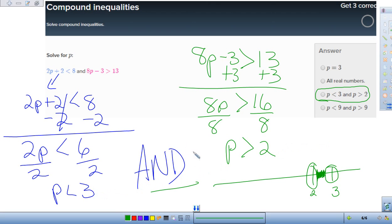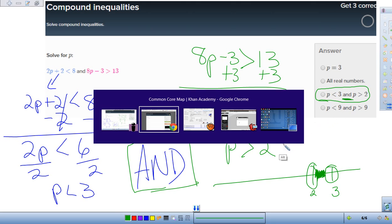But this is an and statement. It means that both have to be true. This has to be true and this has to be true. This is a compound inequality where both have to be true. So we're just looking at the areas in between and the and statement. And there it is.